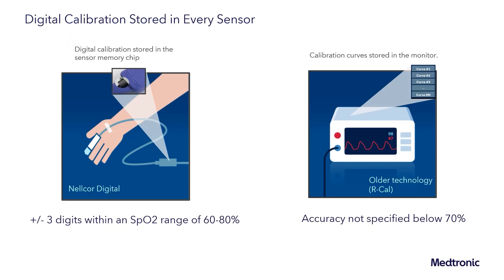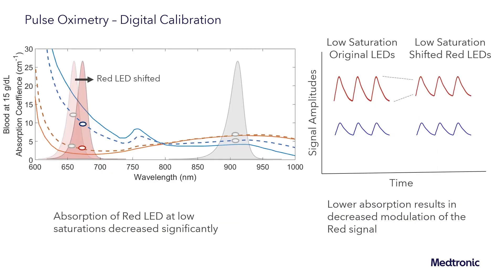The last example that we will walk through is employing digital calibration. Nelcor employs digital calibration on the sensor memory chip. By doing that, Nelcor is able to achieve an accuracy specification of plus or minus three digits within the range of 60 to 80%. That's contrasted with older technology where that calibration curve had to live on the monitor. To understand why Nelcor is able to achieve higher accuracy than older technologies, we can go back to our fundamentals of pulse oximetry where we had talked about looking at those absorption spectra of blood. We have two different cases: a low saturation case shown as the blue dashed line, and a high saturation case shown as the red dashed line.